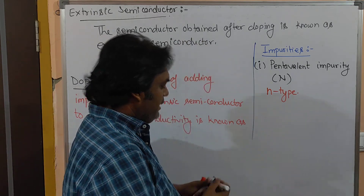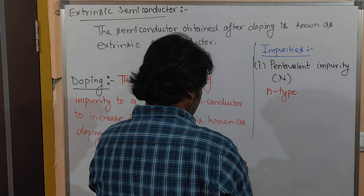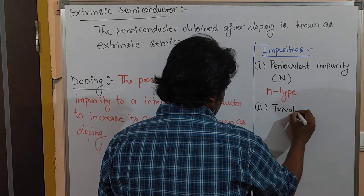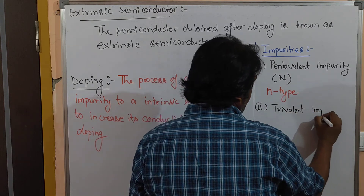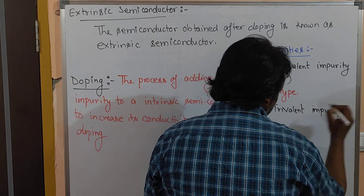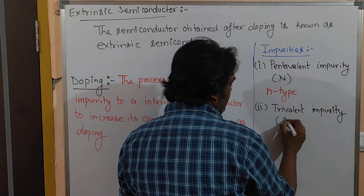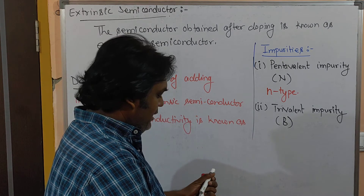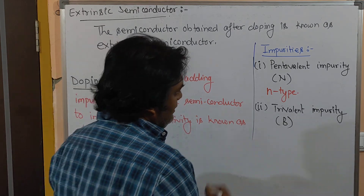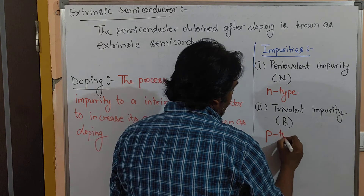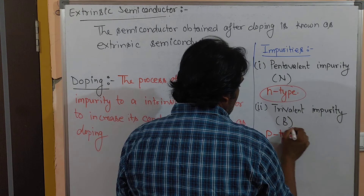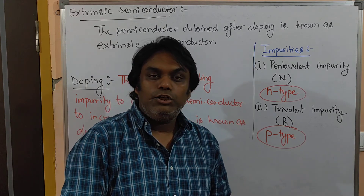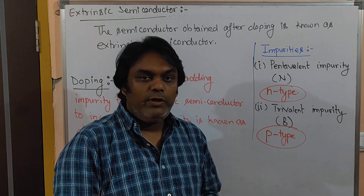The second type uses a trivalent impurity — for example, a boron atom. Such kind of extrinsic semiconductor is known as a P-type semiconductor. So these are the two types of extrinsic semiconductor obtained by doping an intrinsic semiconductor with impurities.